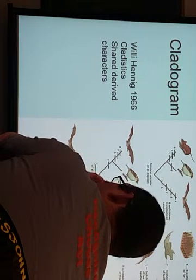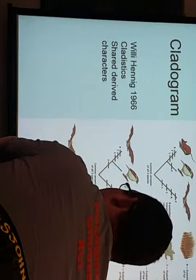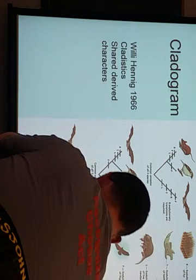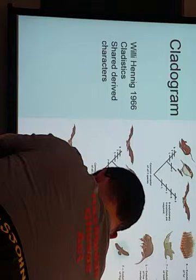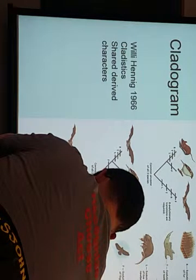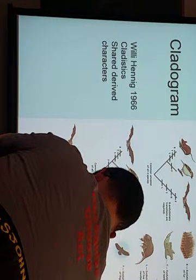If they share a derived characteristic, then they go together. So fur — if you share fur, then you're going to be in a group together. If you don't have fur, you'd be in another group. So what you can do is make a cladogram using those traits. You can make a lot of different cladograms depending on how you decide to do it.